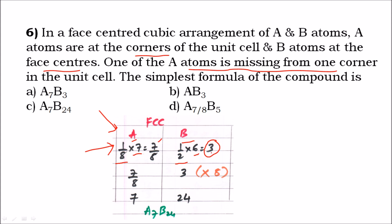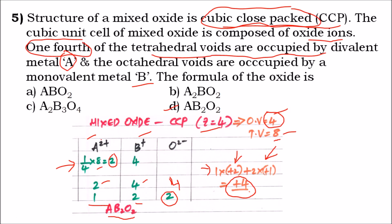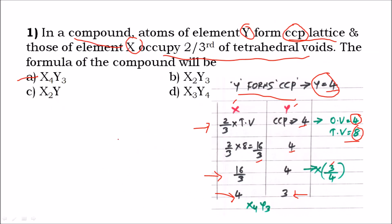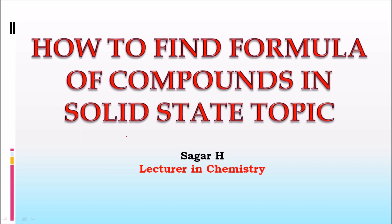We have A as seven-eighths and B as three. To get whole numbers, multiply both by eight: A becomes seven and B becomes twenty-four. So the empirical formula is A₇B₂₄. This is the right answer. That completes all six multiple choice questions on finding formulas of compounds. Please subscribe to my channel, thank you.